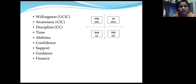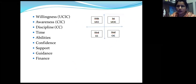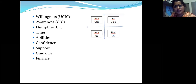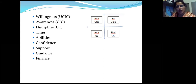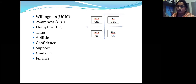Let's quickly understand what UCIC, CIC, and CC mean - there are four quadrants. UCIC means Unconscious Incompetent: I am in a zone where I am not aware of what I want to do and I am not competent to do it - like driving a car or cooking, I don't know and I'm not even aware I need to learn it. That is the first zone. Then you become Conscious Incompetent: you feel yes, I should learn this, but you are not yet competent to do it. Moving from the first to the second zone is easy.